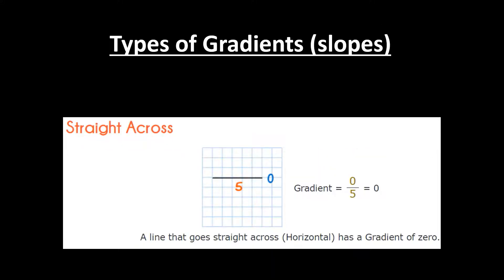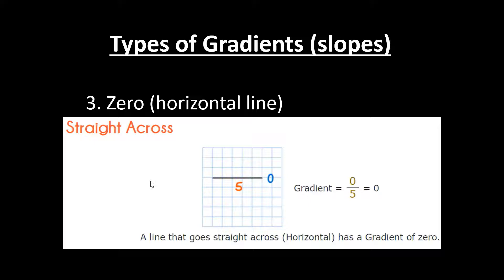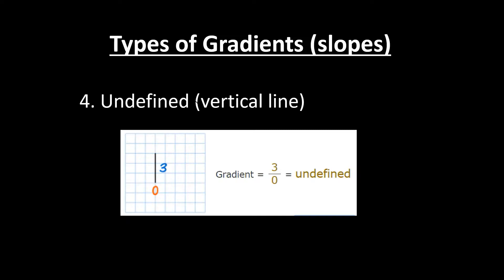The third type of slope is a horizontal line, which has a value of zero. It's moving straight across, and you can clearly see why the gradient here is zero. Gradient is given by rise over run. The rise value in this case is zero since there's no vertical shift, and the run value is five units across, so zero divided by five is always zero. Therefore, a horizontal line will always have a gradient of zero.